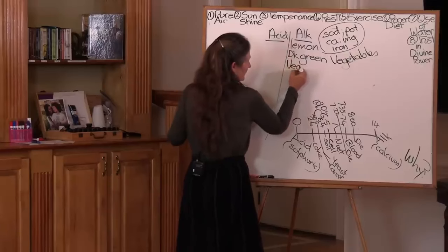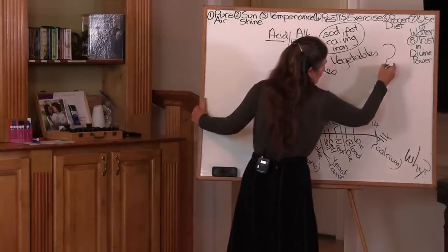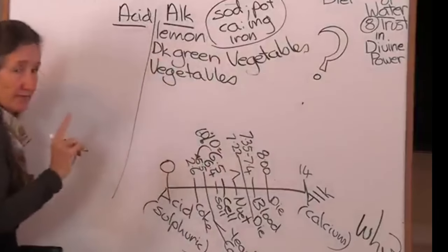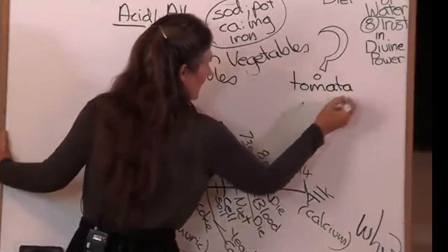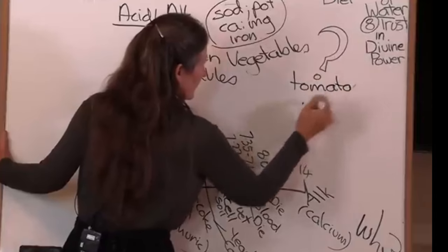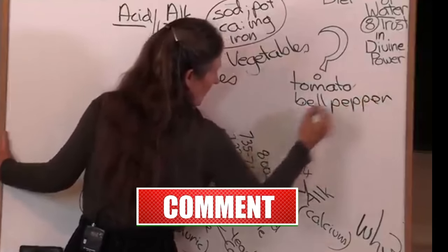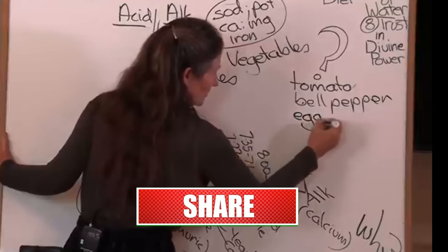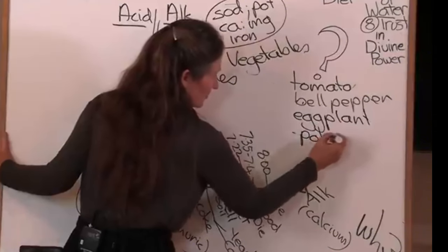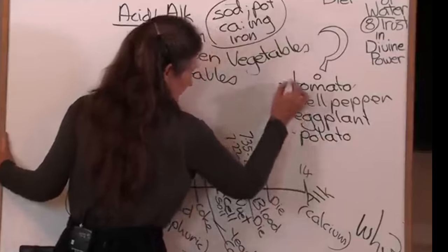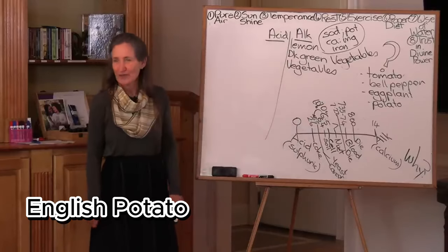Also vegetables. Vegetables have an alkaline effect. But there is a question mark with vegetables. I'm putting a question mark here because for some people these have an alkaline effect and sometimes an acid effect. It's the tomato and bell pepper, or in Australia we call that capsicum, also eggplant, and some countries call this aubergine. And last is the potato. Now this is not the sweet potato. I'm referring to the English potato or the Irish potato.